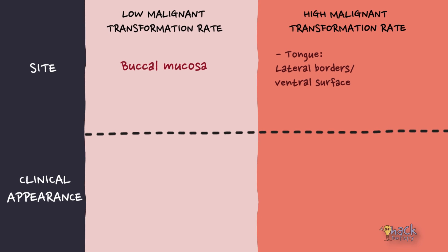Whereas lesions on the lateral borders, ventral surface of the tongue, and floor of the mouth have been found to have higher malignant transformation rates.